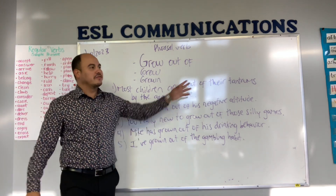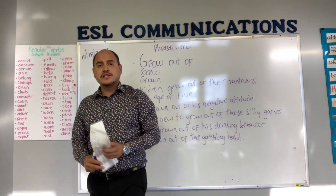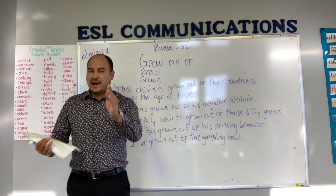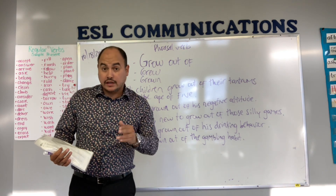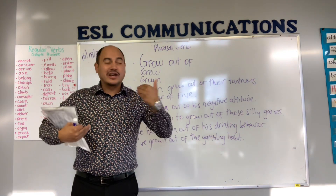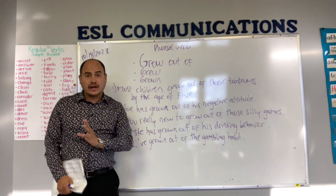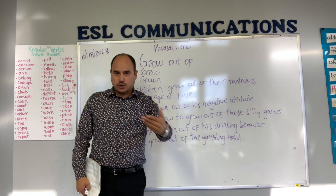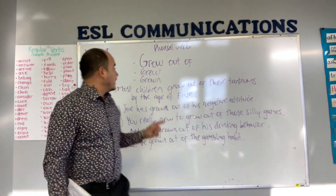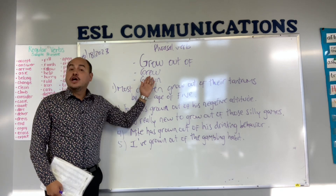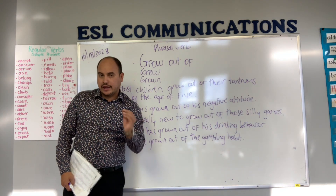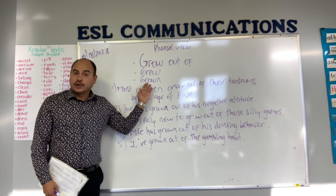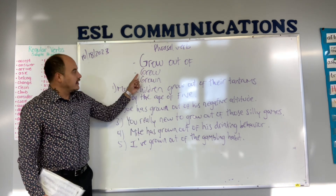So let's dive into it. ¿Qué es este phrasal verb del que te quiero hablar ahora? Este phrasal verb tiene que ver con el verbo grow, to grow. Para aprender bien inglés, tú tienes que dejar de traducir palabra por palabra y tienes que interpretar lo que expresan las palabras, no solo traducir literalmente. El verbo grow es el verbo crecer. El pasado simple de grow is grew, and the past participle, el pasado participio es grown — crecer, crecí, crecido.